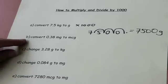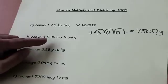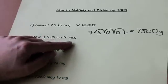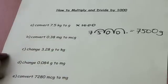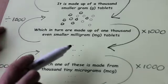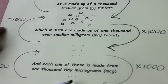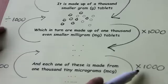This is asking us to convert 0.38 milligrams to micrograms. So am I going to multiply or divide? Let's look at our diagram. And so going from milligrams to micrograms, we're going from big to small and we're going to multiply by 1,000.